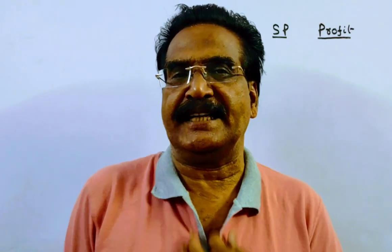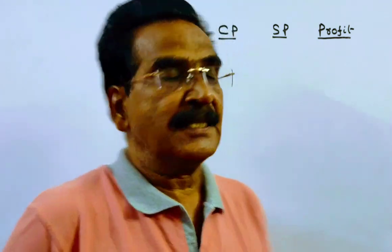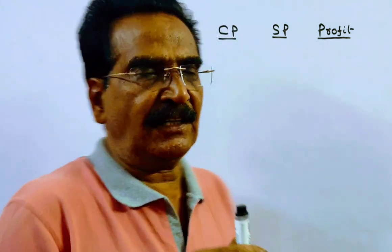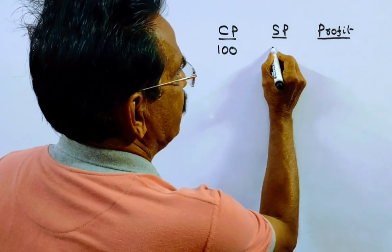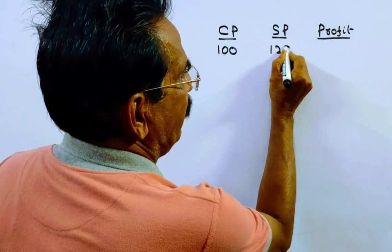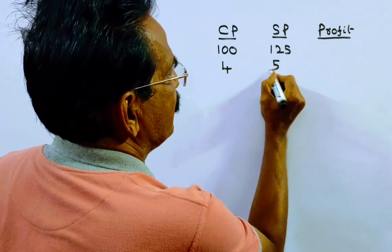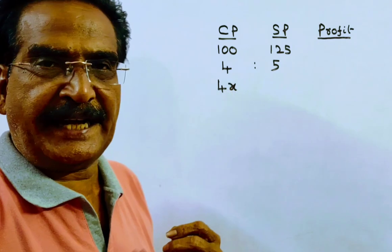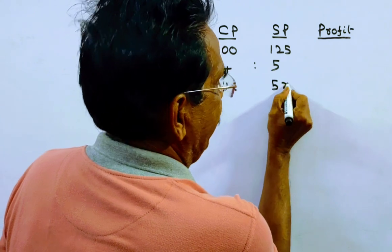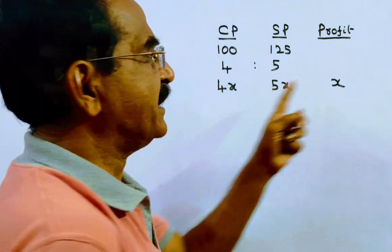Hi friends, good morning. Please look at the next problem in profit and loss. An article is sold at a profit of 25 percent. If cost price is 100, then the sold price will be 125. The ratio is 4:5, meaning if cost price is 4x then the sold price will be 5x, and profit will be 5x minus 4x, which equals x.